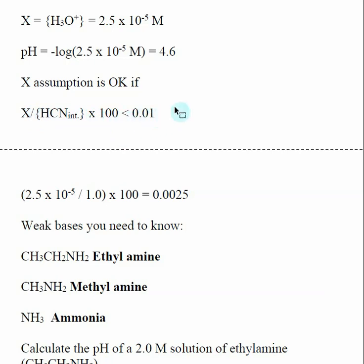So here our X value that we calculated was 2.5 times 10 to the minus 5th. Our initial concentration of HCN. We do the division and multiply by 100. We get 0.0025, which is smaller than 0.01. So our assumption that X was small did not have a significant effect on our end calculation of pH.